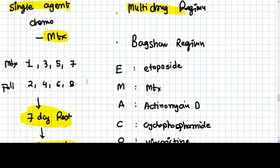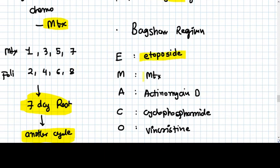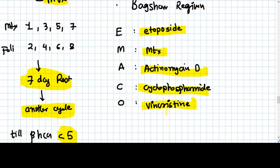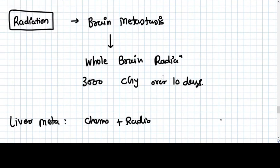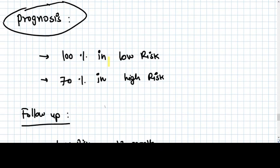We continue till beta-HCG is less than five, and even after less than five we should give three more cycles. For multi-drug regimen we have Bagshaw regimen: etoposide, methotrexate, actinomycin D, cyclophosphamide, vincristine. EMACO is the mnemonic for that. When there's brain metastasis we should go for radiation. Even for liver metastasis we should go for radiation. If the choriocarcinoma is low risk, there is 100% chance of survival. Even high risk there is 70% survival rate.